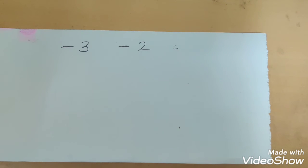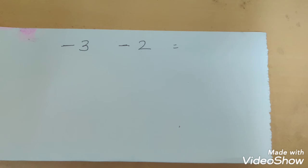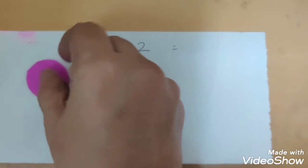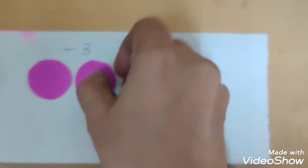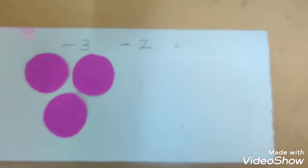It says minus 3 minus 2. Remember, I said that whenever there is a number which has a negative sign prior to that, we associate it with the pink color. It could be anything but in our examples we are taking it as pink color. So, when we say minus 3, that means there are 3 of the pink circles.